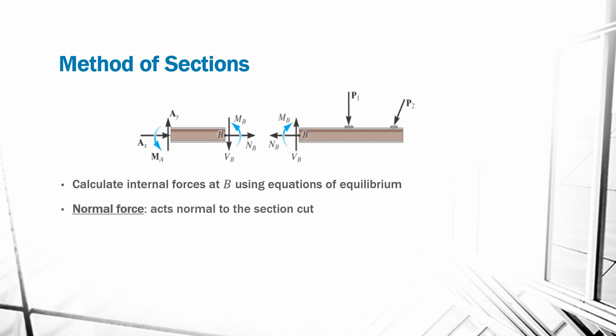This will result in three values. We will have a normal force that acts normal to the section cut. In this case, the normal force is acting along the x-axis. We will have a shear force that acts tangential to the section cut. In this example, the shear force is acting along the y-axis. And we will have a bending moment.